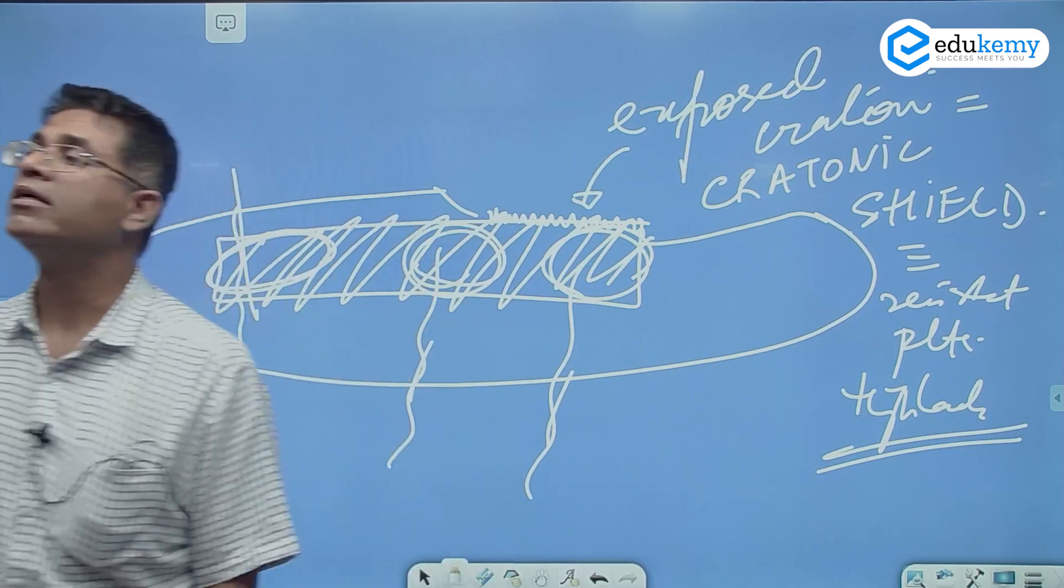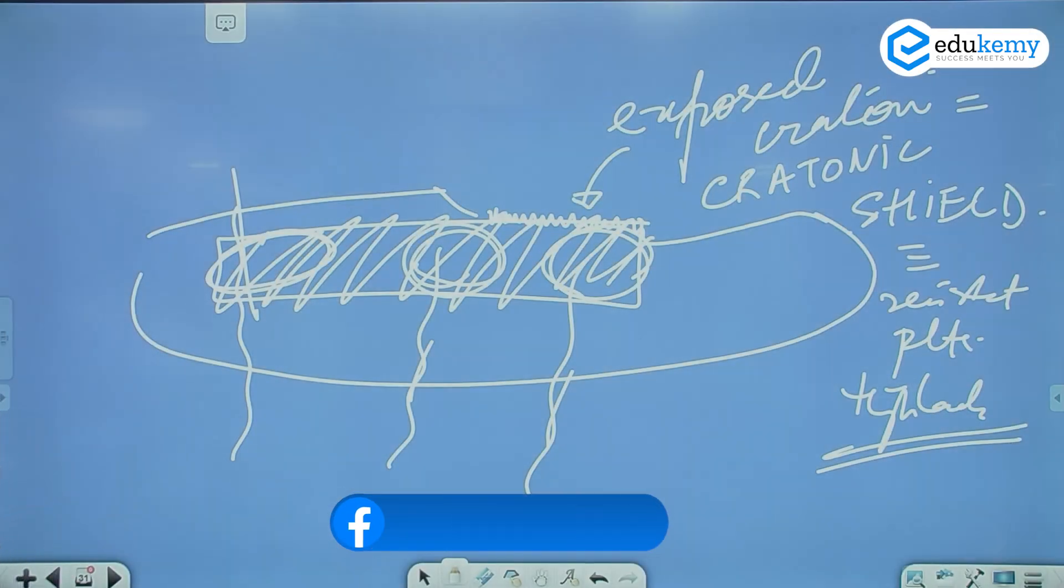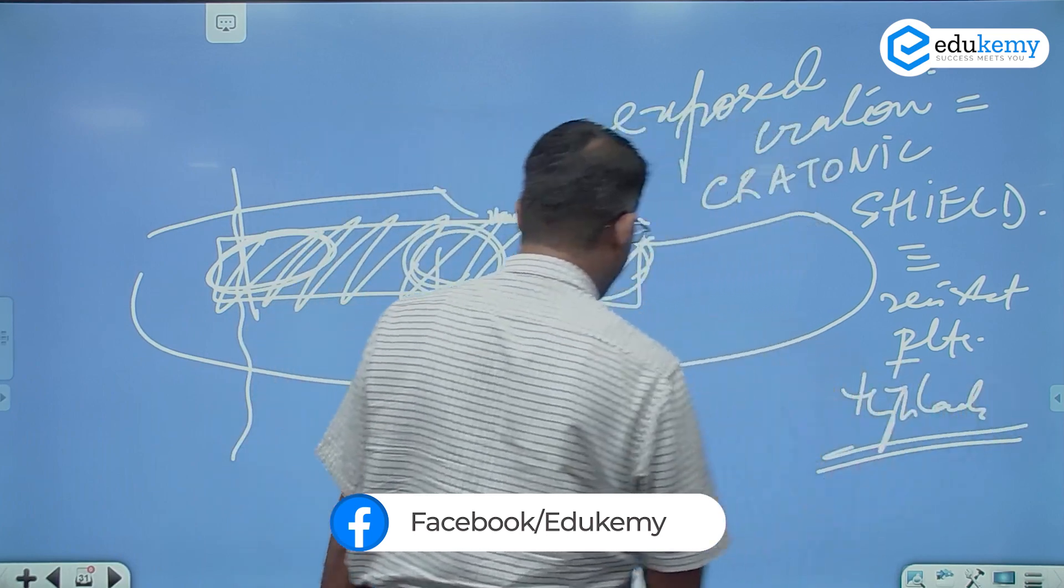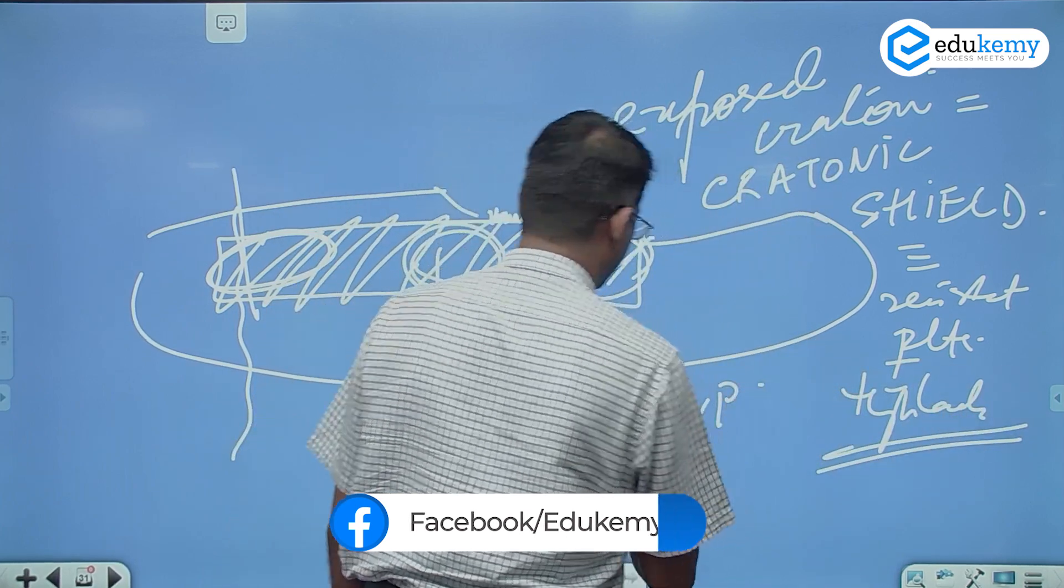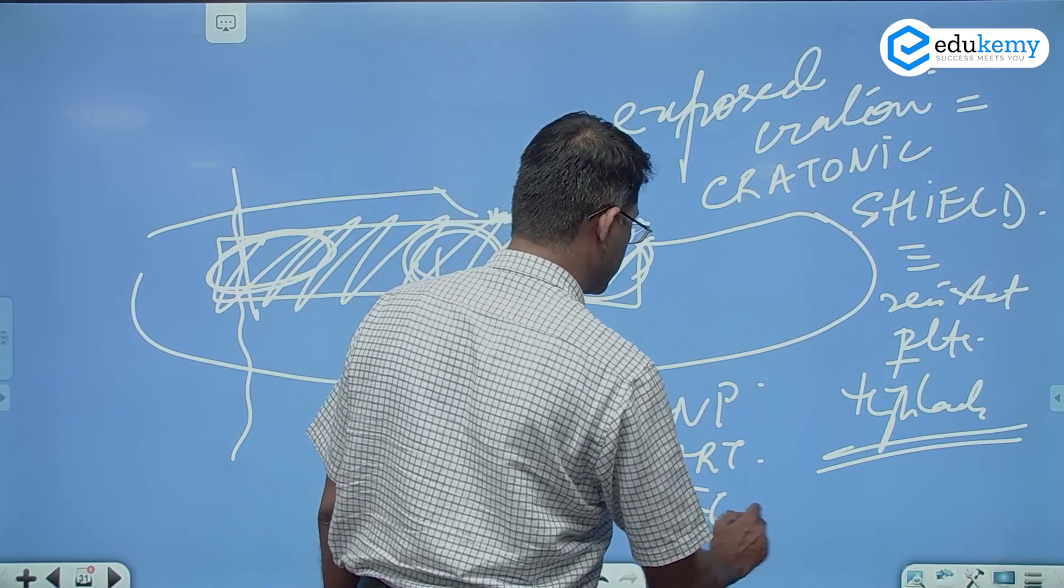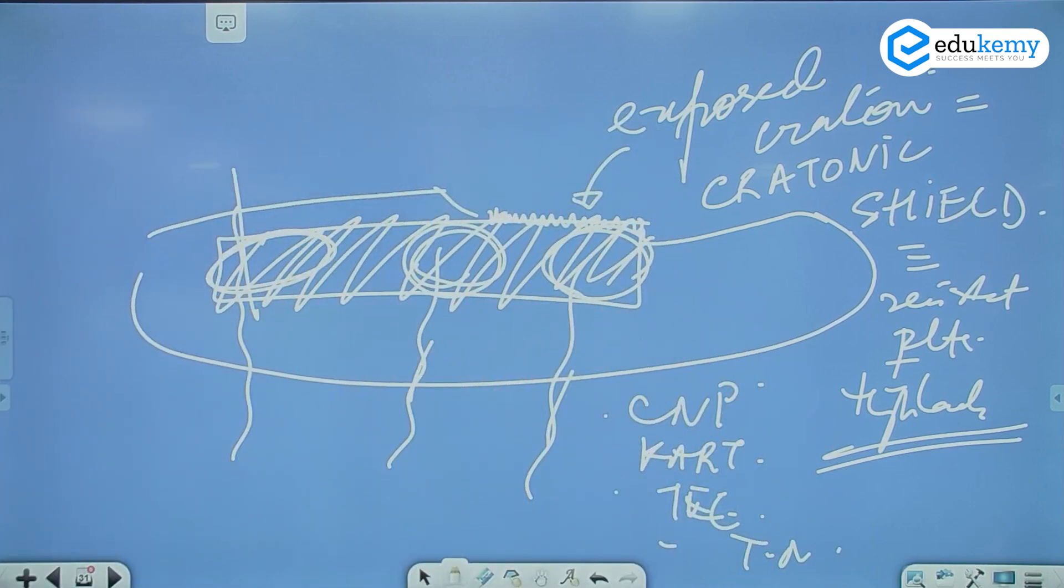Example. The Chota Nagpur plateau of India. The Karnataka plateau of India. The Tamilnad plateau of India. The Telangana highlands of India. So they become elevations. Because the soft rocks will get eroded. This hard one will stick out. So they are exposed Cratonic shields. And they are resistant plateaus and highlands. Like Chota Nagpur plateau. Like Karnataka plateau. Like the Telangana highlands. Like the Tamilnad plateau. All of them are Cratonic shields.